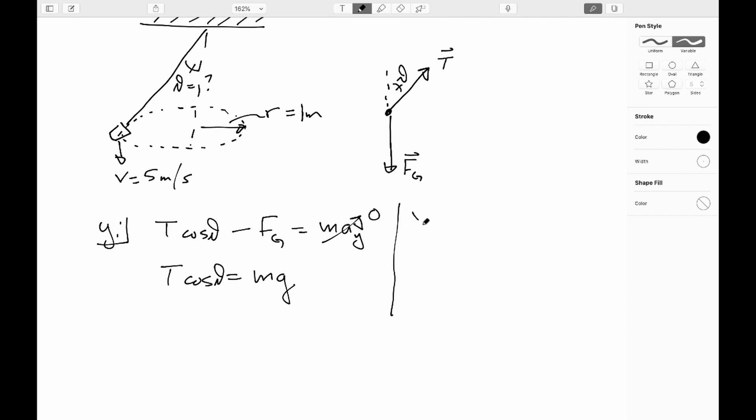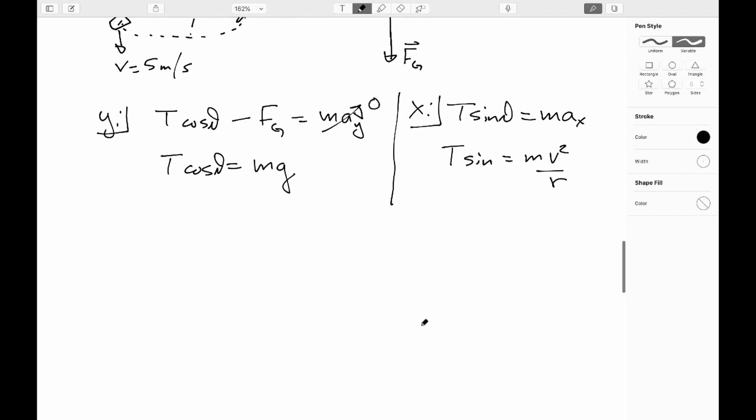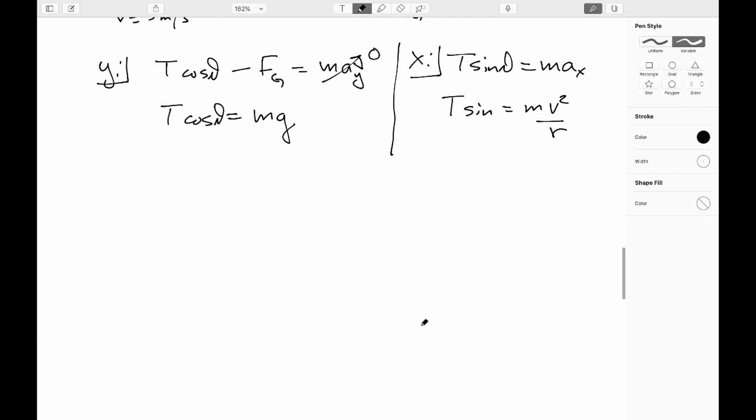So we can rearrange this, get that t cosine theta is equal to the force of gravity but the force of gravity is equal to mg, so okay that's as far as we can take that for the moment. Let's go over to the land of x. The only force or piece of a force that's acting in x is the x component of the tension, that's equal to t sine theta, that'll be equal to m a sub x, but here's the trick again you're moving in the circle so you know what the acceleration is, you know that it is equal to v squared over r.